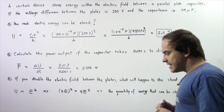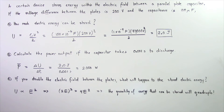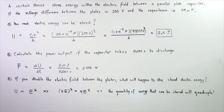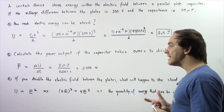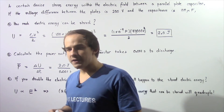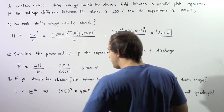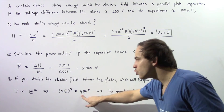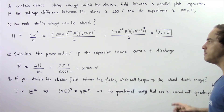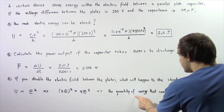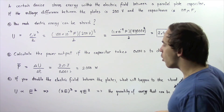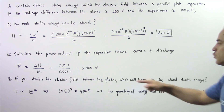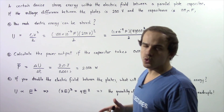Now let's move on to part C. If you double the electric field between the plates and everything else stays the same, what will happen to the stored electric energy? Recall that the stored electric energy within a parallel plate capacitor depends on the square of the electric field. So if we double the electric field, we quadruple the stored electric energy between the two parallel plates. The quantity of energy that can be stored will increase by a factor of 4, going from 2 joules to 4 times 2, or 8 joules of energy.